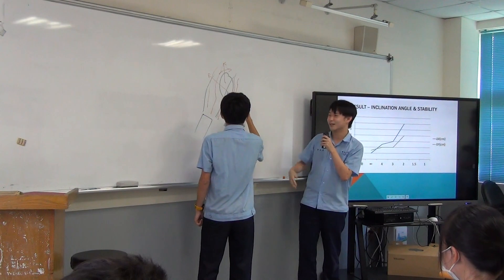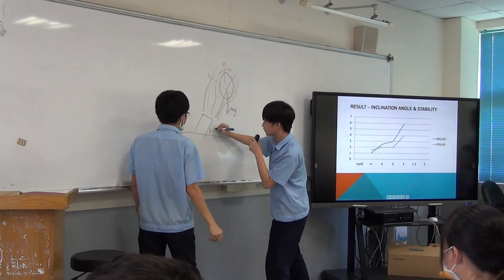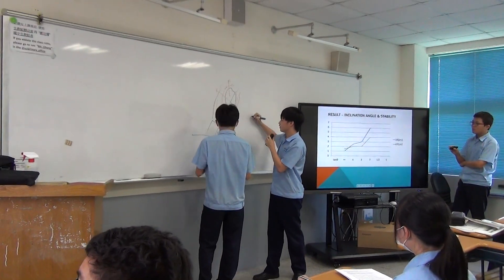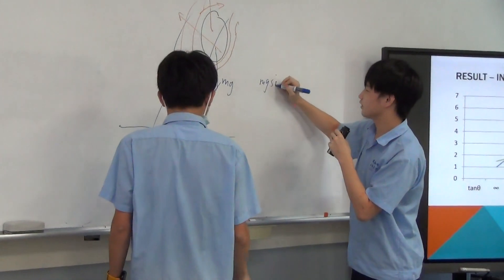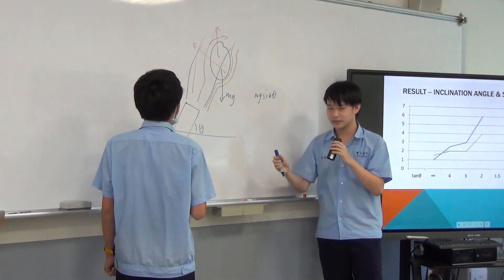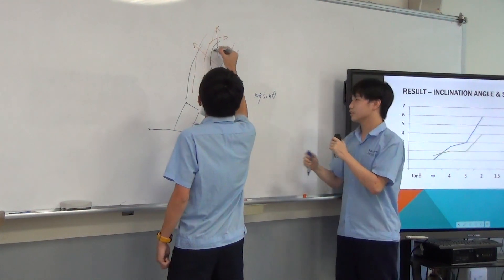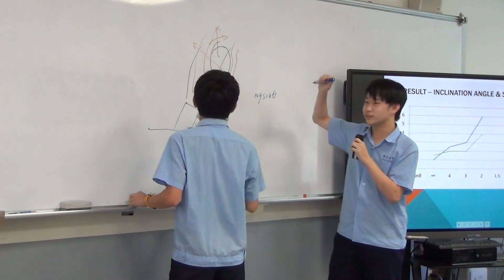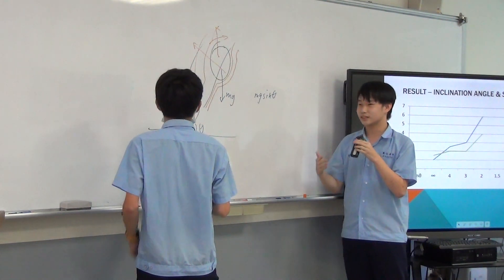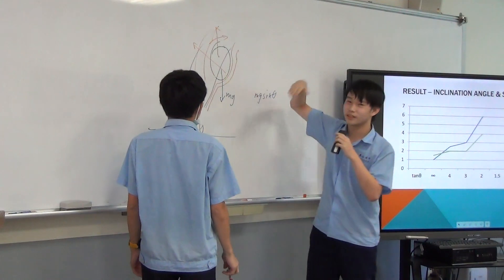If the inclination is theta, we can know that the upward force is going to be mg sine theta. If theta is bigger, mg sine theta becomes bigger as well, which means the force here needs to resist more gravity — more force — making the system not very stable, which means it could basically fall down or go in any direction.